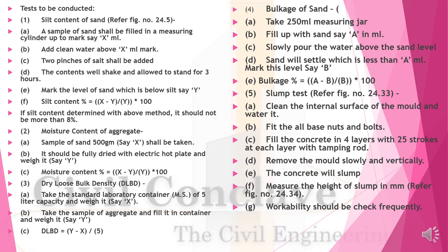Bulkage of sand test: Take a 250 ml measuring jar, fill sand to level A. Slowly pour water above the sand level; sand will settle to level B. Bulkage percentage = (A - B) / B × 100. Slump test: Clean the internal surface of the mold and wet it. Fill concrete in four layers with 25 strokes each using a tamping rod. Remove mold slowly and vertically, and measure the slump height in mm. Workability should be checked frequently.